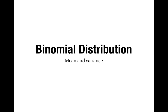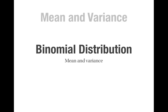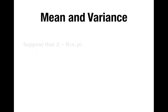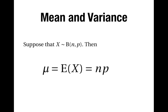This is a video about the mean and variance of a binomial distribution. Suppose that we have a random variable which has the binomial distribution where n is the number of trials and p is the probability of success. It can be proved that the mean of this distribution, or the expected value of x, is equal to n times p — the number of trials times the probability of success.